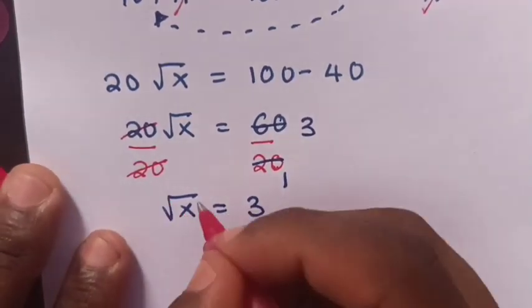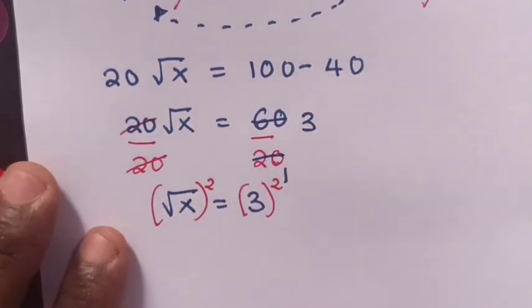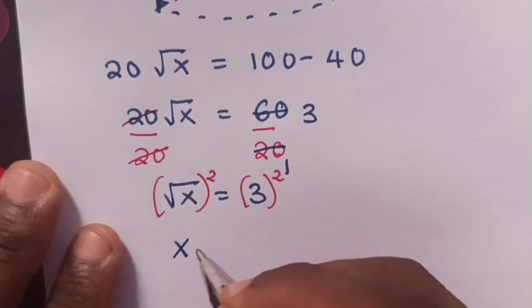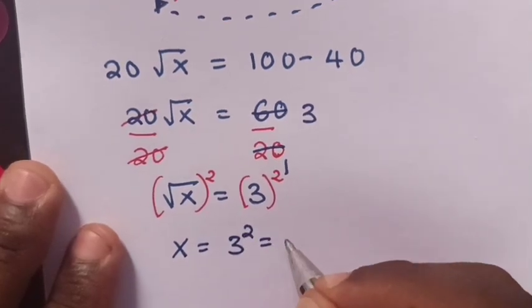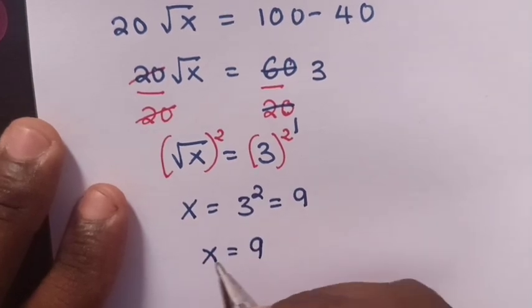Then, we square both sides. x will equal 3 squared, which is 9. Therefore, the value of x is 9.